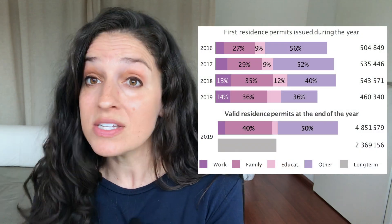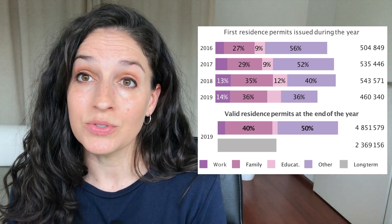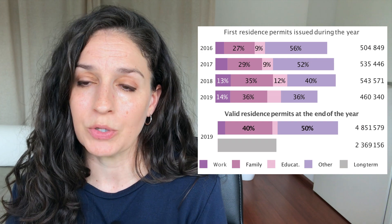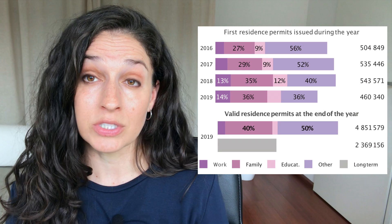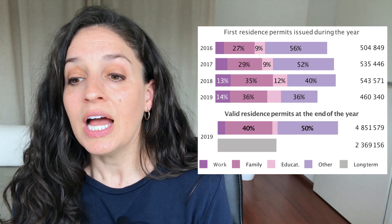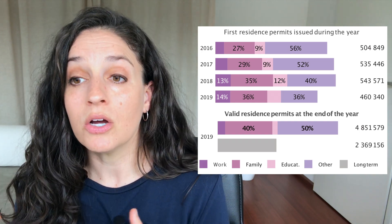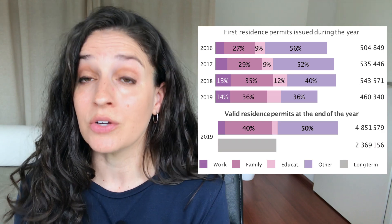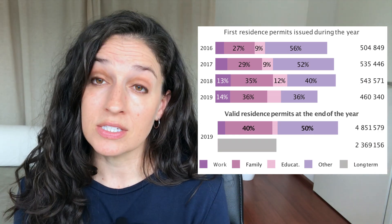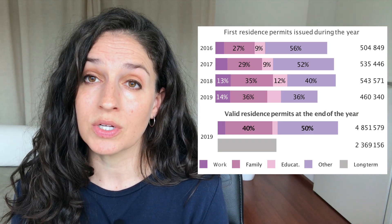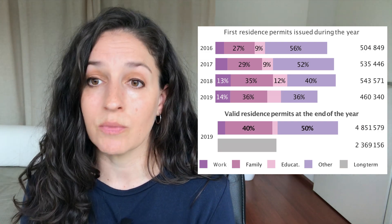Now if we look specifically at residence permits — this is targeted more towards people who are not EU citizens, because EU citizens don't need residence permits — so here we're looking at third-country nationals, or migrants from outside of the EU. Between 2016 and 2019, a large portion of people receiving residence permits from non-EU countries were for 'other reasons,' which includes humanitarian reasons, asylum applications, and refugee status, which makes sense given the time period.